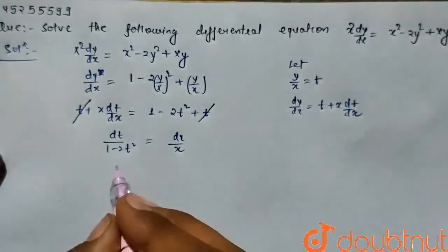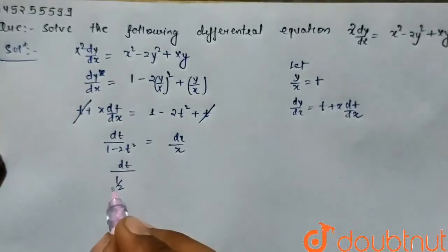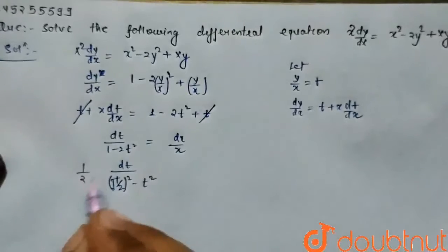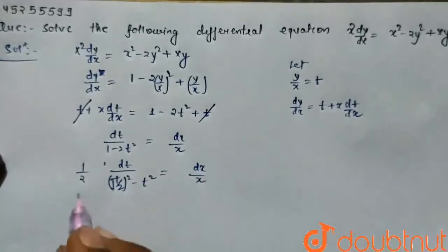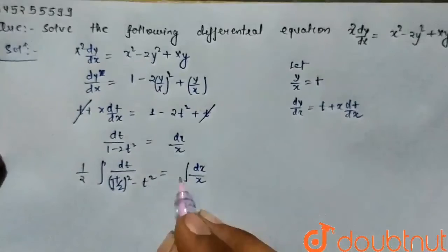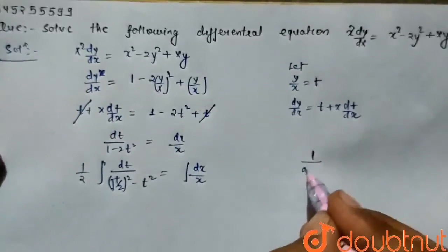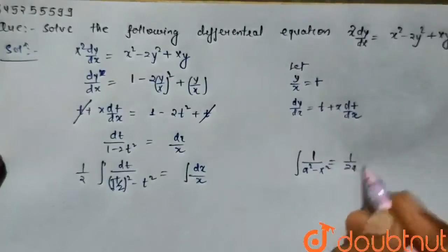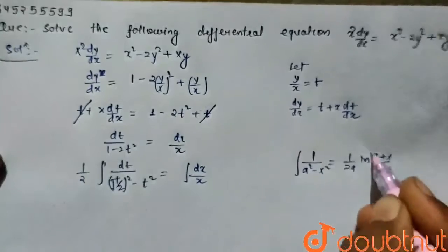On taking 2 as common, dt upon 1 by 2 root whole square minus t square equals dx by x. On integrating both sides, the integration of 1 by a square minus x square equals 1 by 2a ln (a plus x) upon (a minus x).